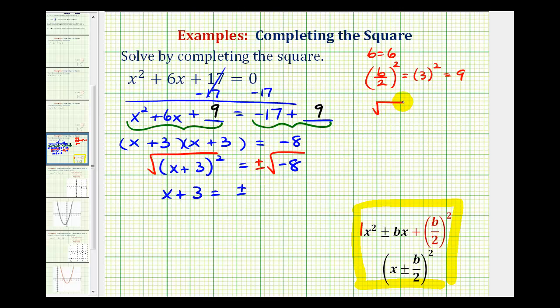The square root of negative 8 is equal to the square root of negative 1 times 2 times 2 times 2. And this simplifies because we know the square root of negative 1 is equal to i, and the square root of 2 squared, or 4, is equal to 2. So this is going to simplify to 2i square root 2.